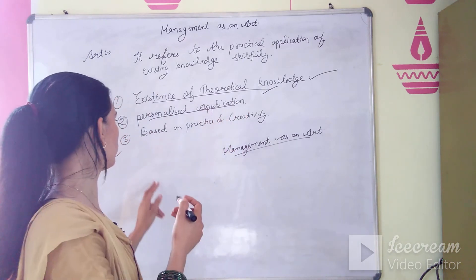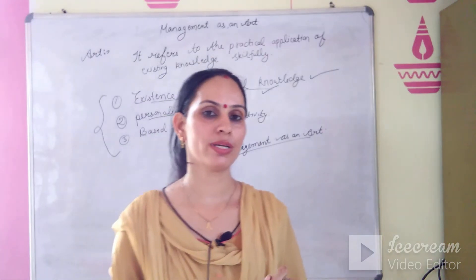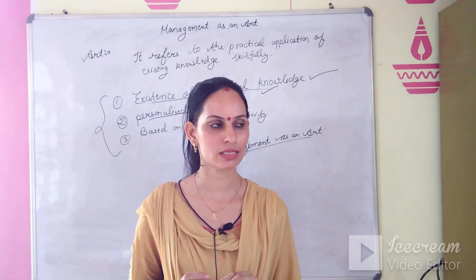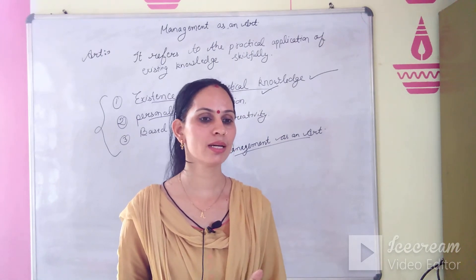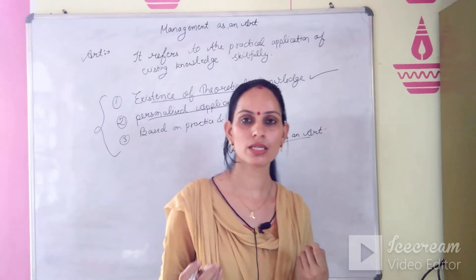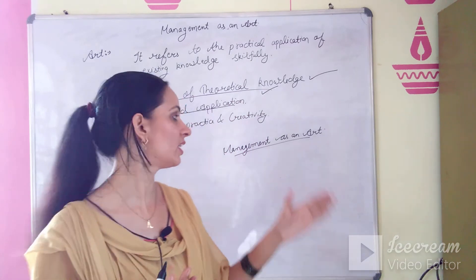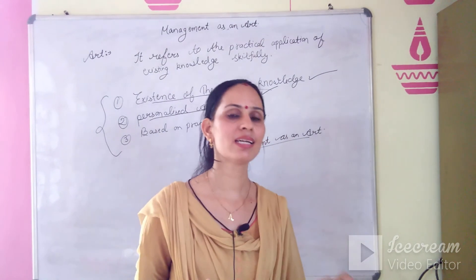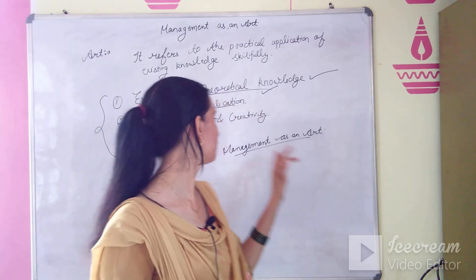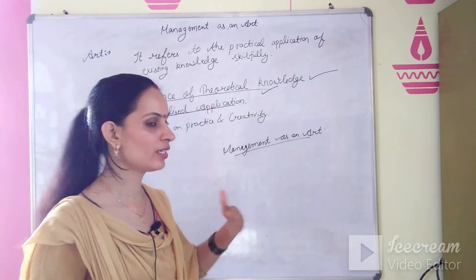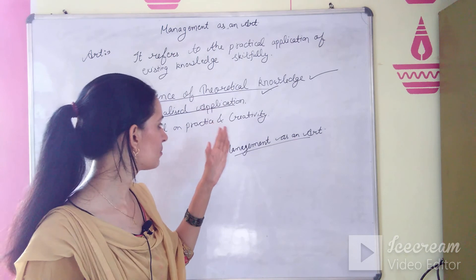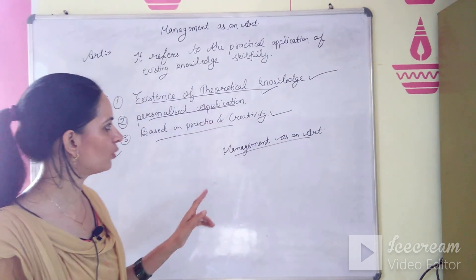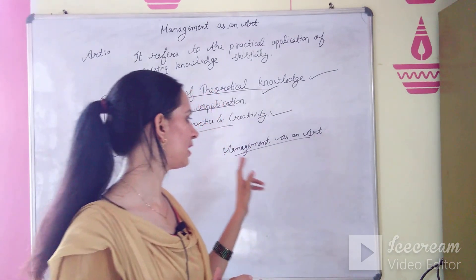The third feature of art is that it is based on practice and creativity — art always improves with practice and creativity. For example, when Shahrukh Khan started with television serials, his acting wasn't as polished, but over time, with practice and creativity, his films have become blockbusters worth thousands of crores. Similarly, managers who start managing also learn and improve their mistakes over time. Management is therefore based on practice and creativity. Since all three features of art are fulfilled by management, management can be called an art.